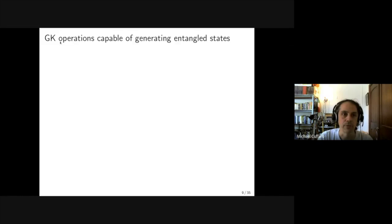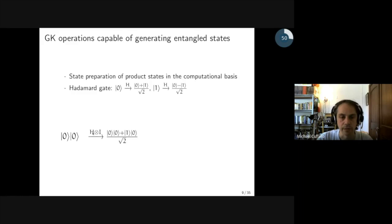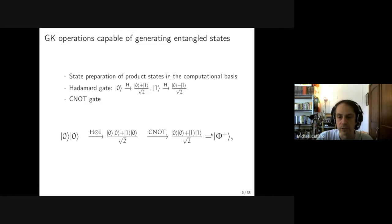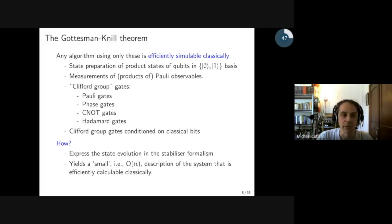What makes this especially interesting is that Gottesman-Knill operations are capable of generating entangled states. For example, begin with a preparation of the product state zero-zero. Apply a Hadamard gate to the first qubit — this gives us a superposition. Now apply a controlled-NOT gate, and that gives us one of the Bell states, which is a maximally entangled state. Depending on what state preparation we begin with, we can use these two gates to get any one of the Bell states. In fact, these operations are actually utilized in the teleportation protocol — no other operations besides these are used.